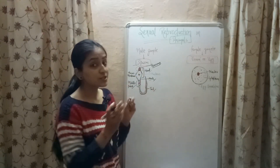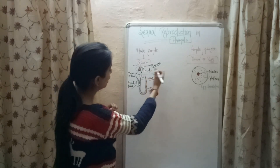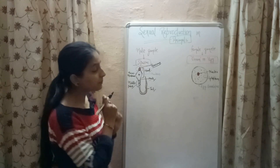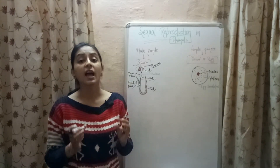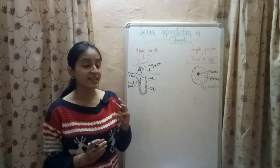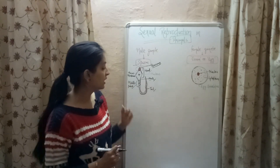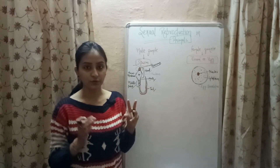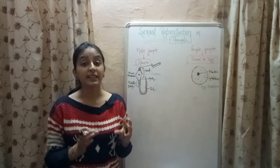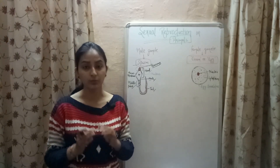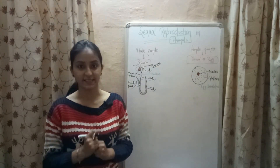The next part is the neck, which is the smallest part of the sperm and it joins the head to the middle piece. The middle piece consists of a cell organelle known as mitochondria, and this mitochondria provides energy to the sperm during the process of fertilization. The tail is the last part of the sperm body and helps in the motility of the sperm, so that the sperm can reach the ovum and fertilize it.